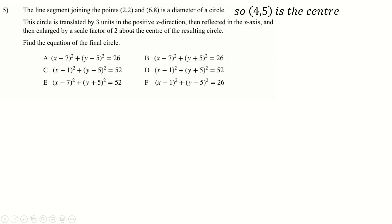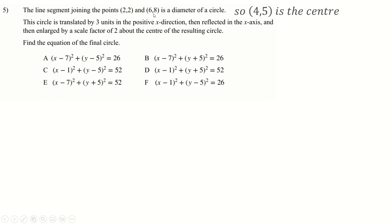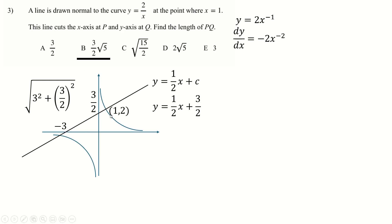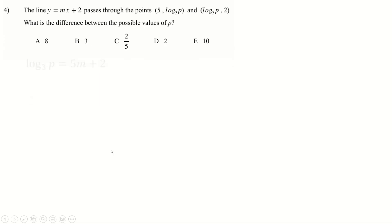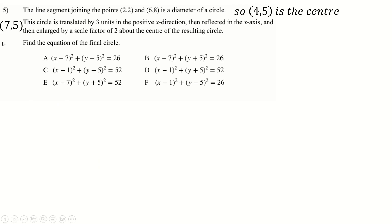Now some circle questions. We have two points forming a diameter, so the midpoint is the centre. The midpoint of x-coordinates 2 and 6 is 4, and of y-coordinates 2 and 8 is 5, so the centre is (4, 5). Moving 3 units in the positive x-direction gives new centre (7, 5). Reflecting in the x-axis keeps the x-coordinate but negates y, so the centre becomes (7, −5).